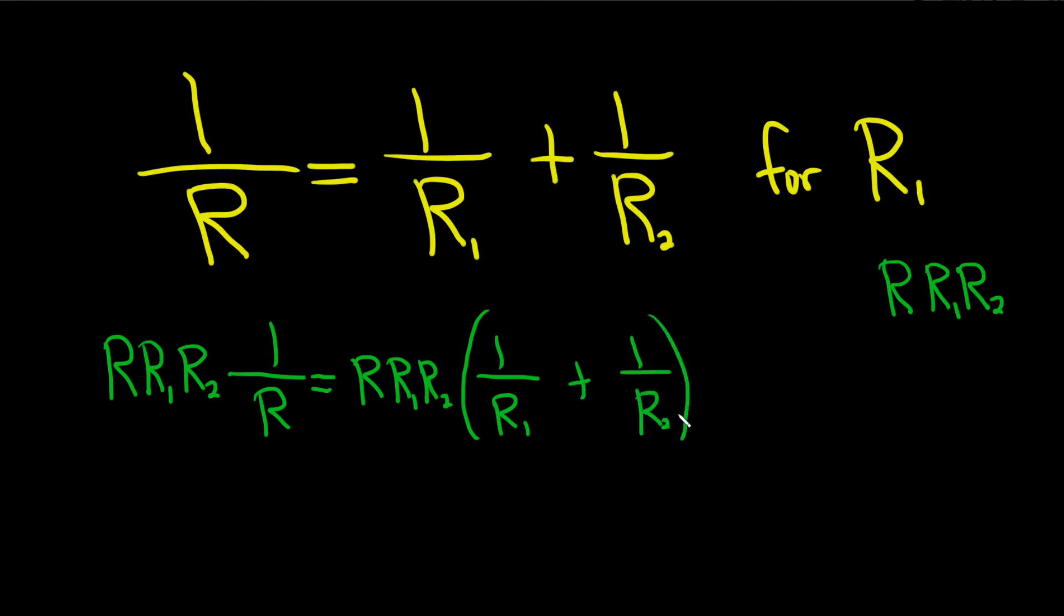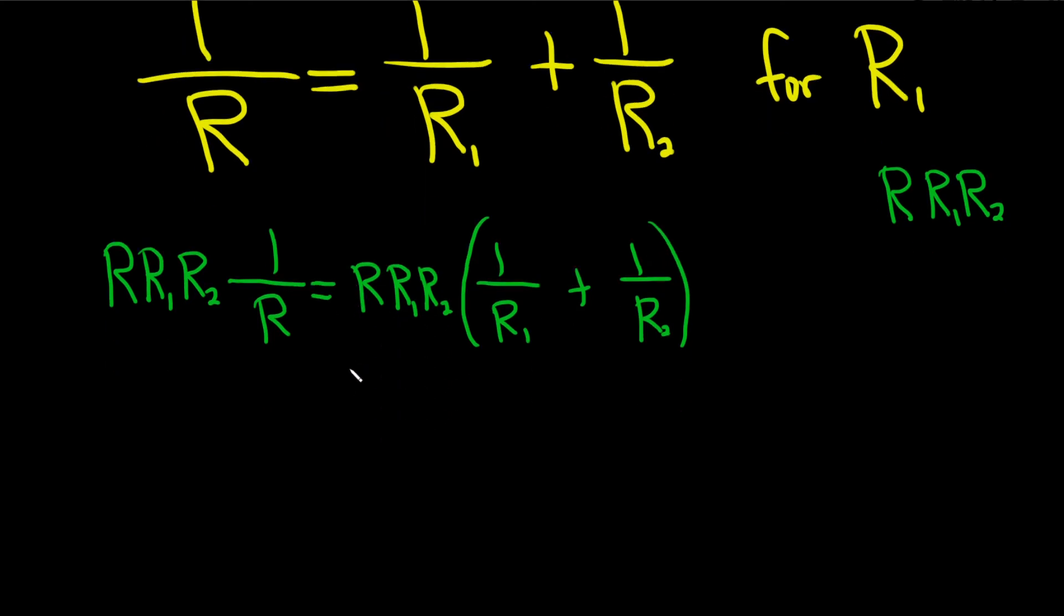You could skip a step and just put it in front of each term. I like to show the work, show the extra step. It's just good to know it's there. On the left hand side, it looks like the R's cancel. This is really over 1, so it's really like R over R. So they do cancel.